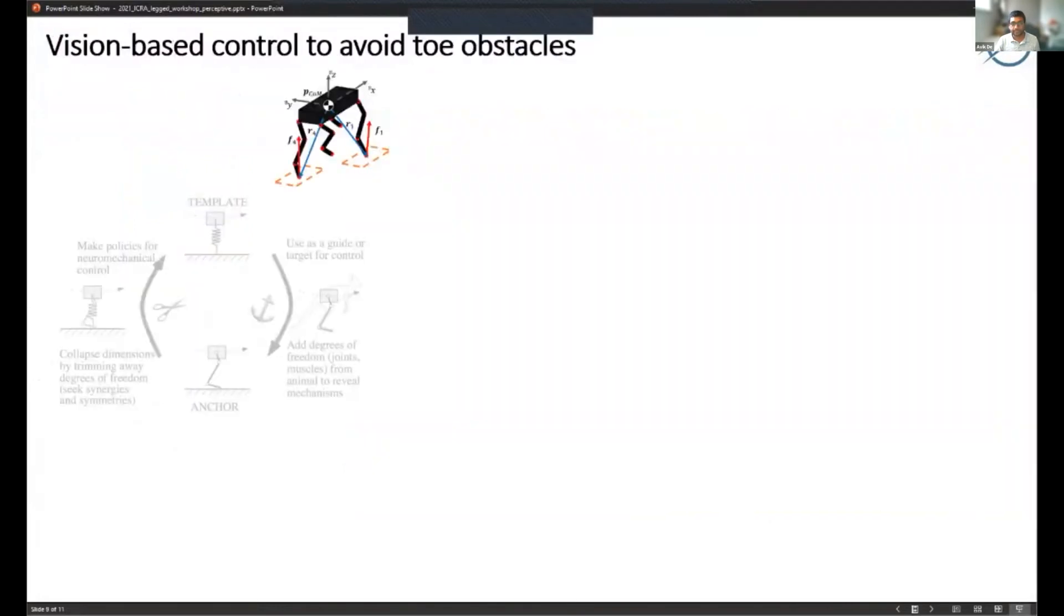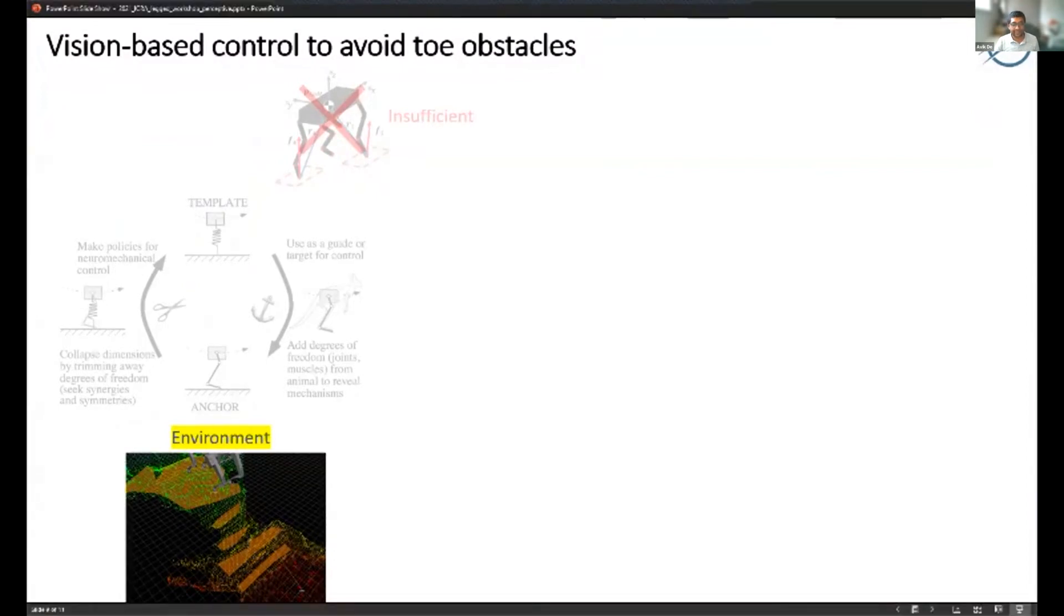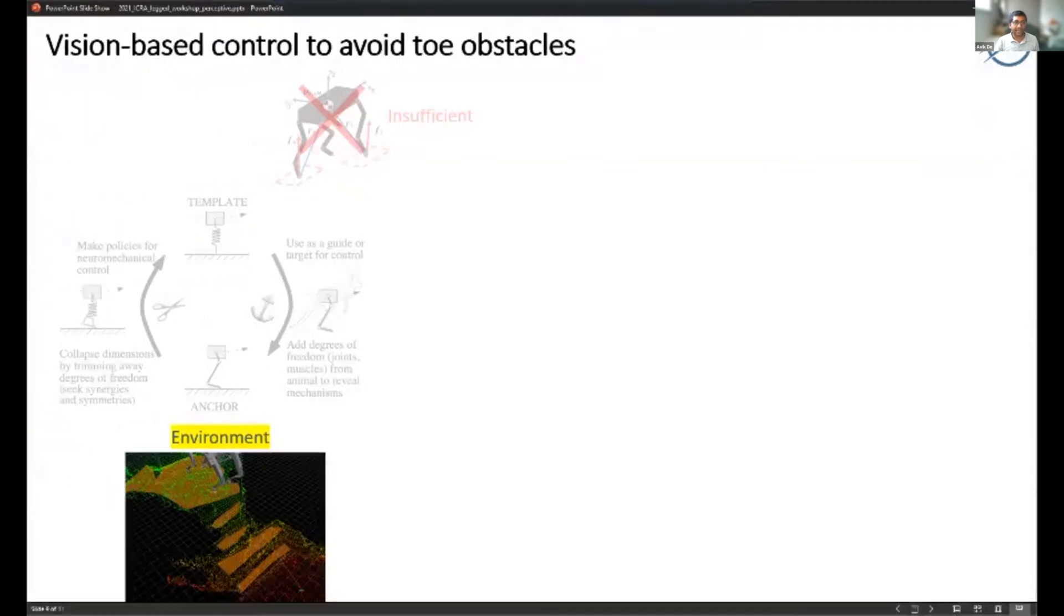That was blind, but now obviously if we want to avoid obstacles with the toes, the simple floating torso seems insufficient, firstly because there are no toes there at all. So what do we do there? We have this complicated environment - you can see this is taking a point cloud and fitting some flat regions to it.